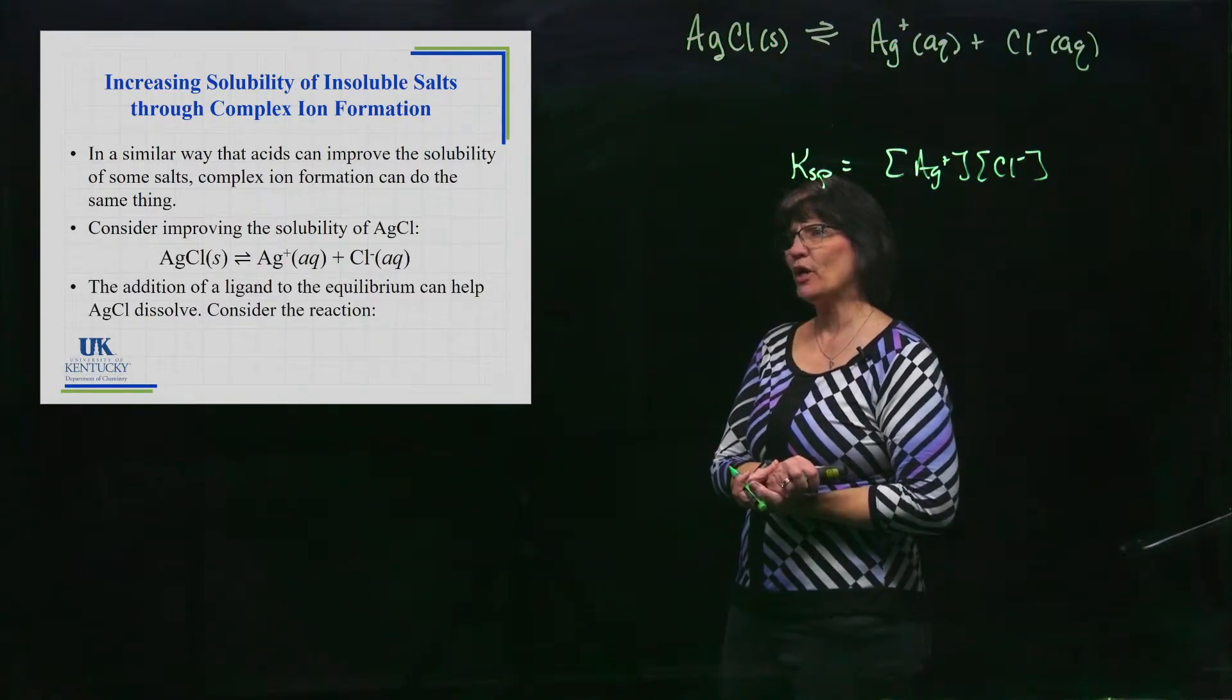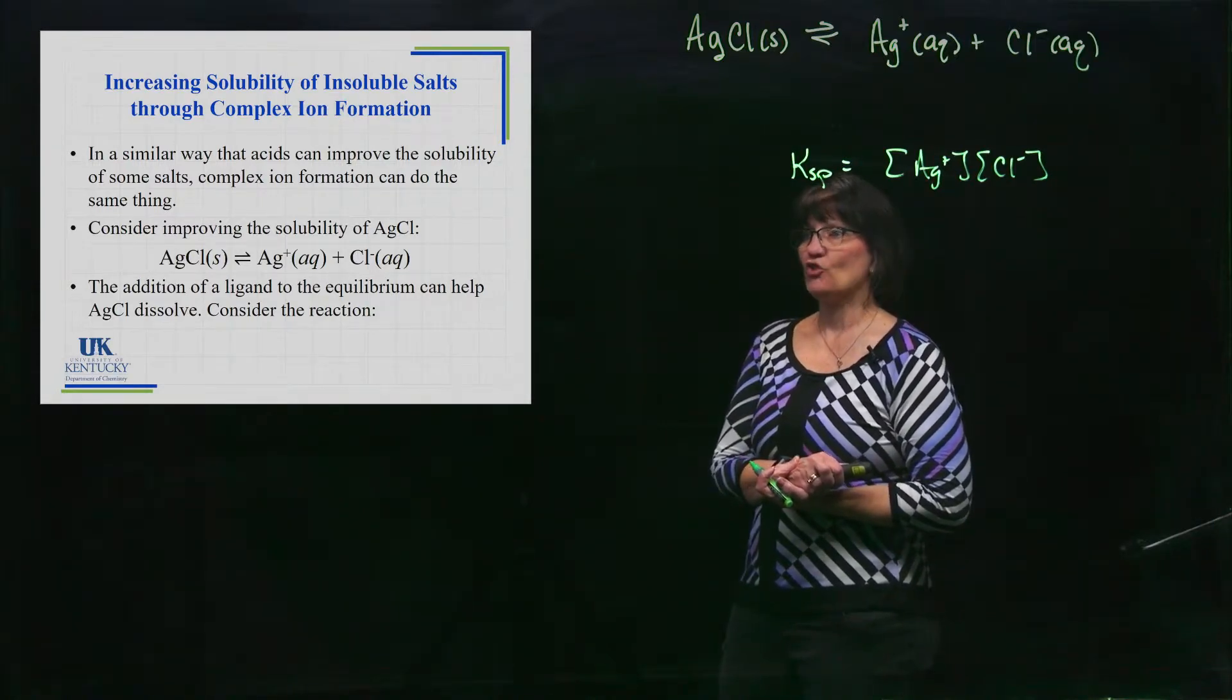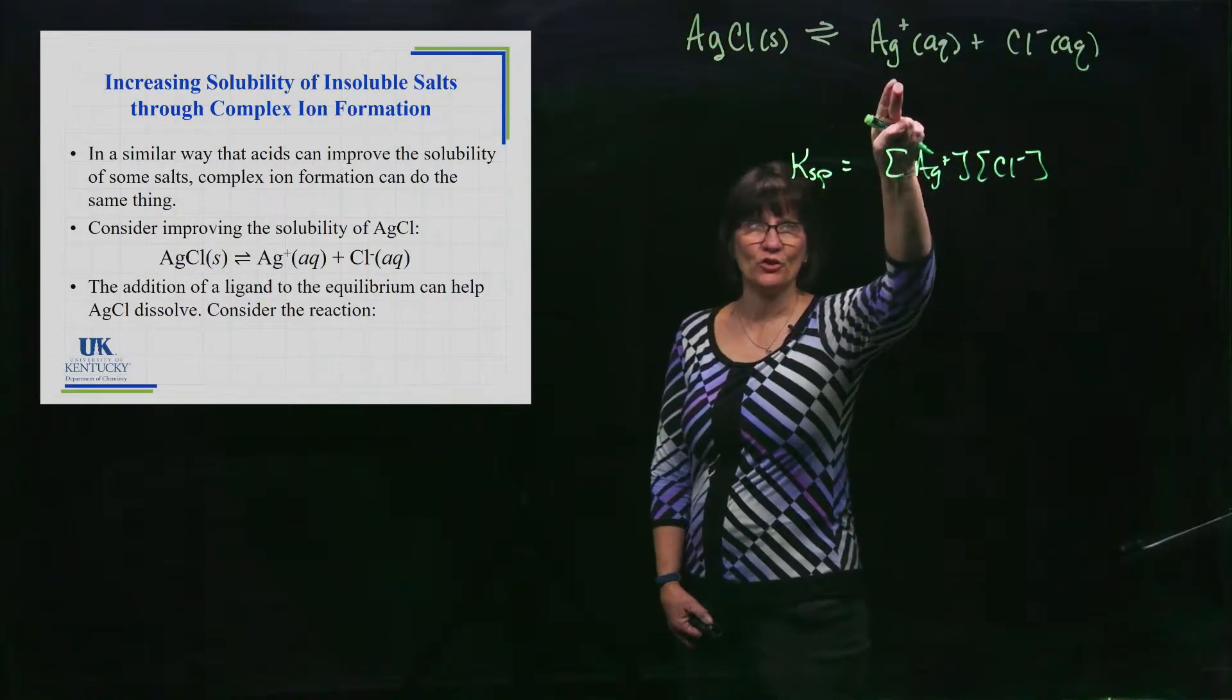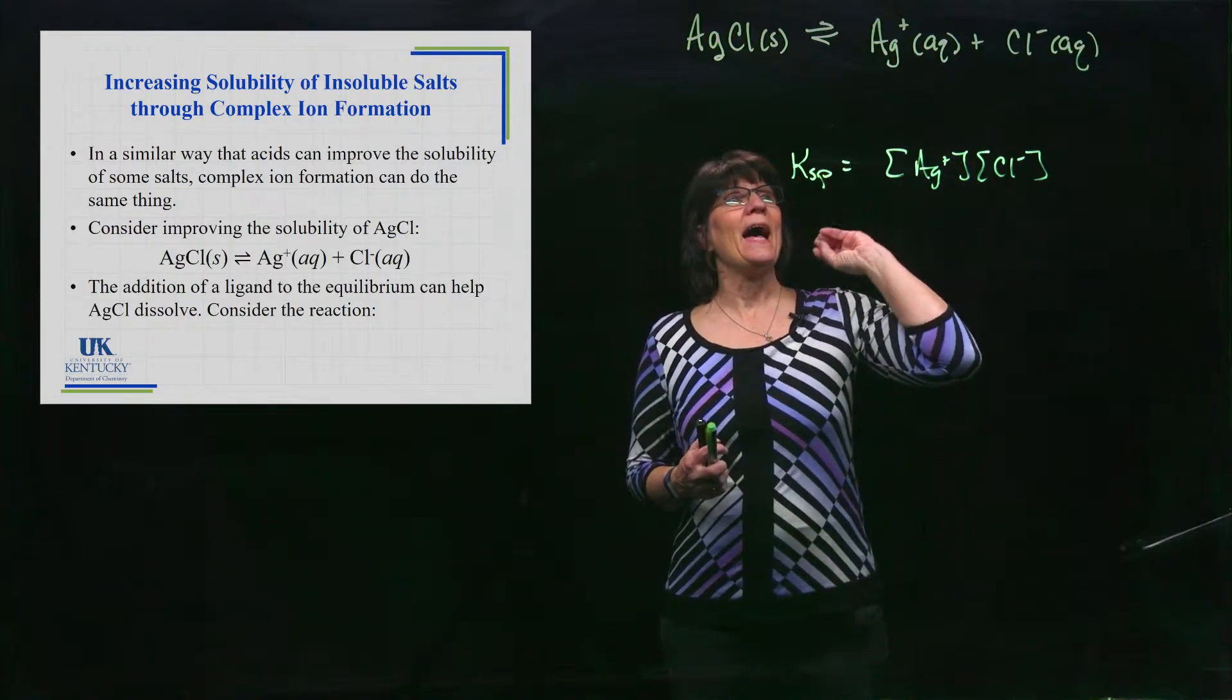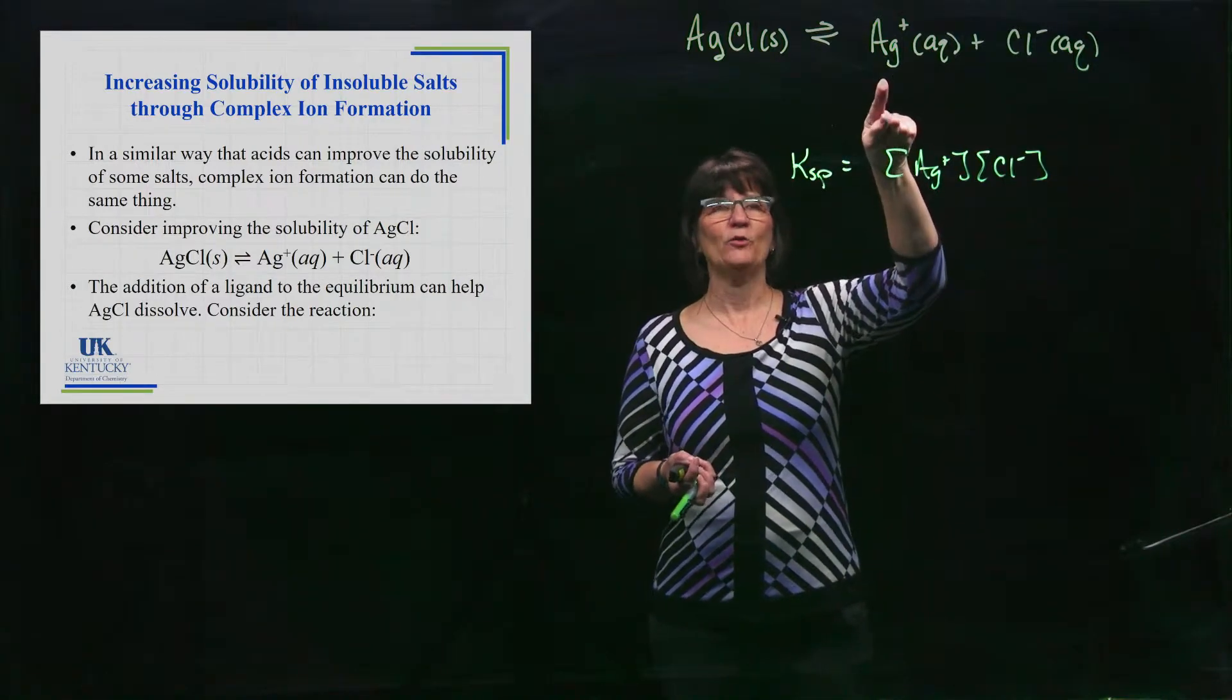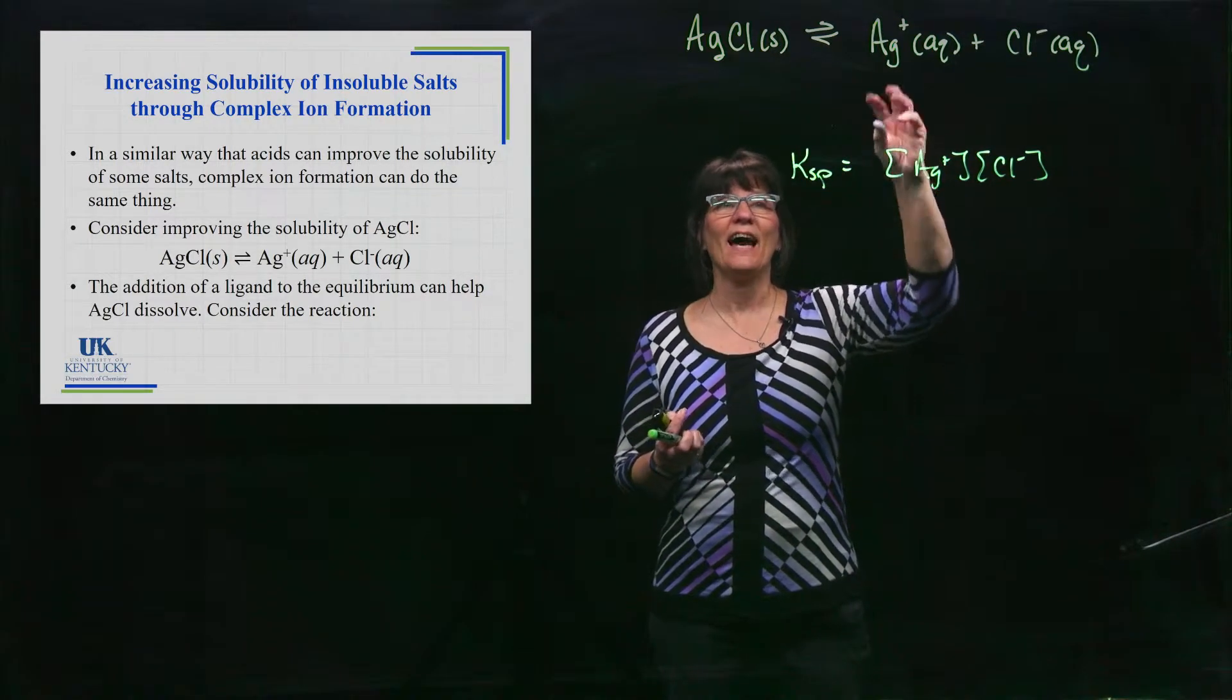Now, if we were to go in there and add a ligand to this solution and cause the silver ion to form a complex ion, we can basically take it out of solution. So we're going to just consider conceptually what's going to go on. If I were to add a ligand that silver could react with and form a complex ion, you are in a sense taking this out of solution.